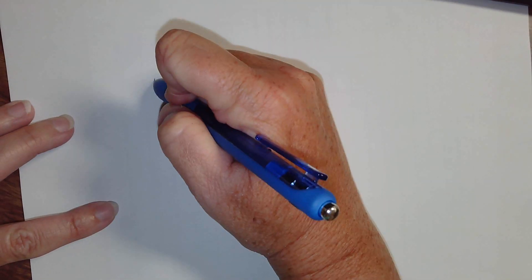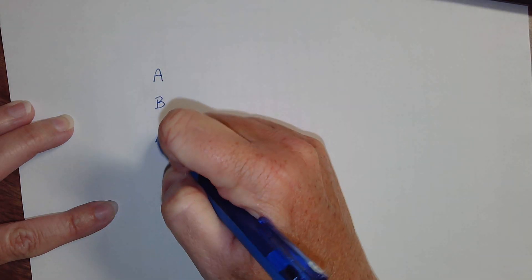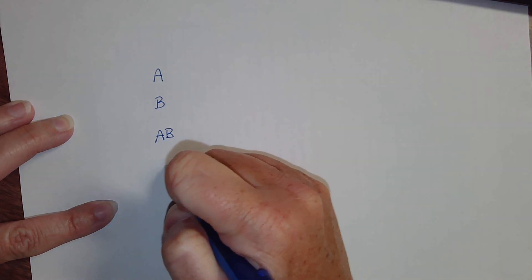This video is going to show you how to do genetics problems with blood type. Blood type is genetically inherited through codominance, and codominance means that more than one allele is expressed simultaneously. With blood type, there are four phenotypes: Type A, Type B, Type AB, and Type O.